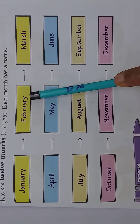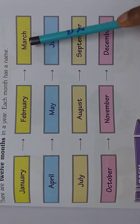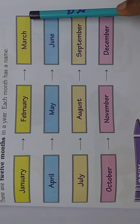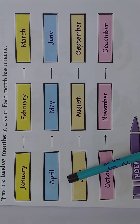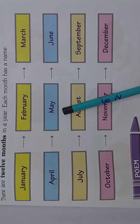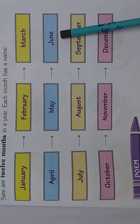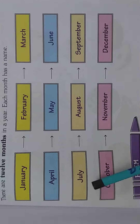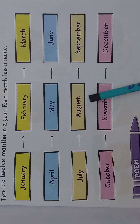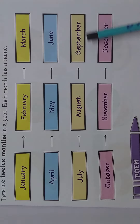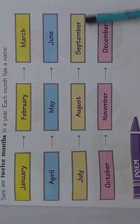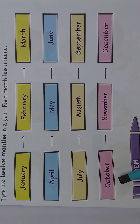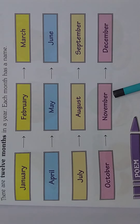February. March. April. May. June. July. August. September. October. November. December.